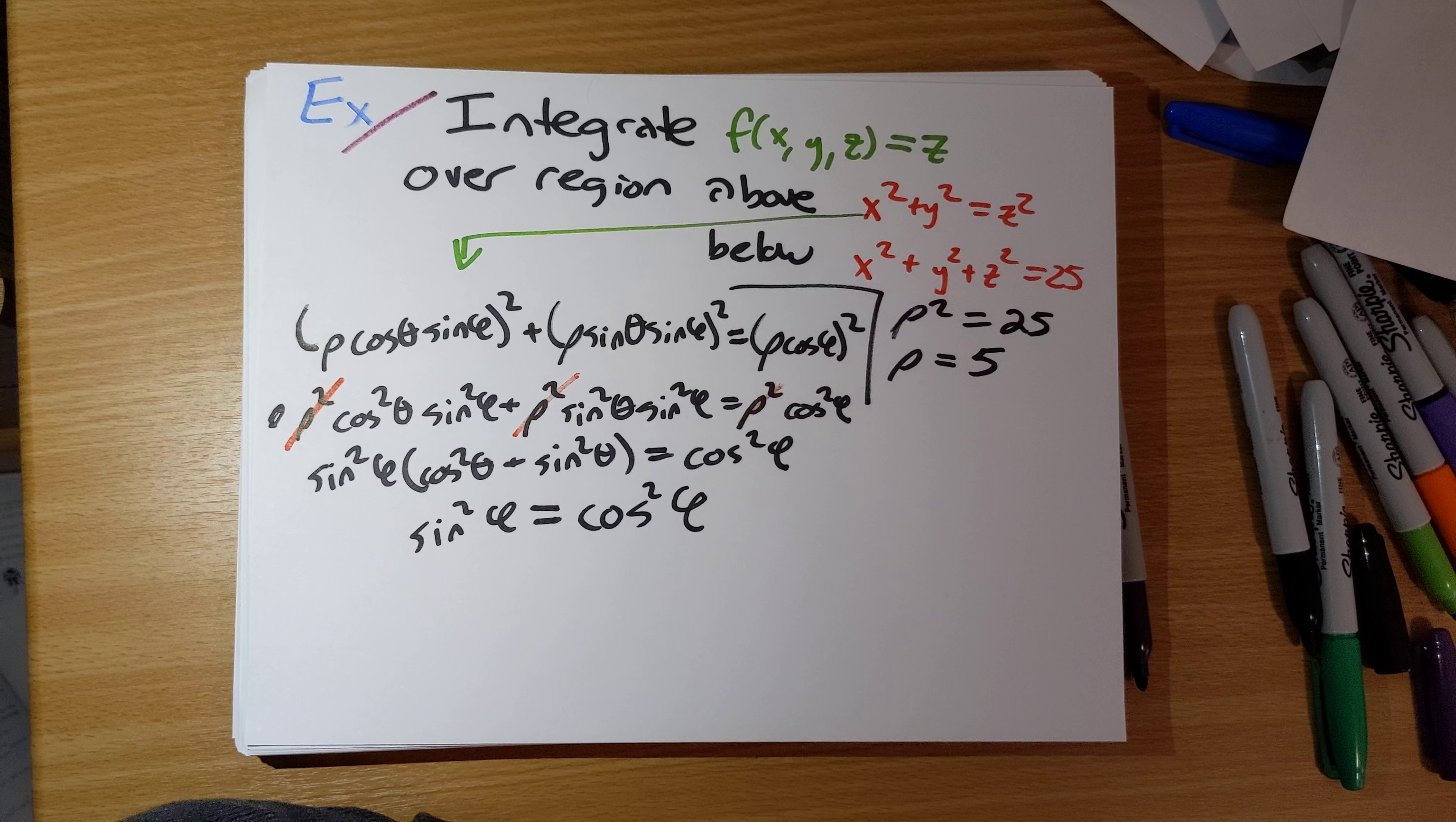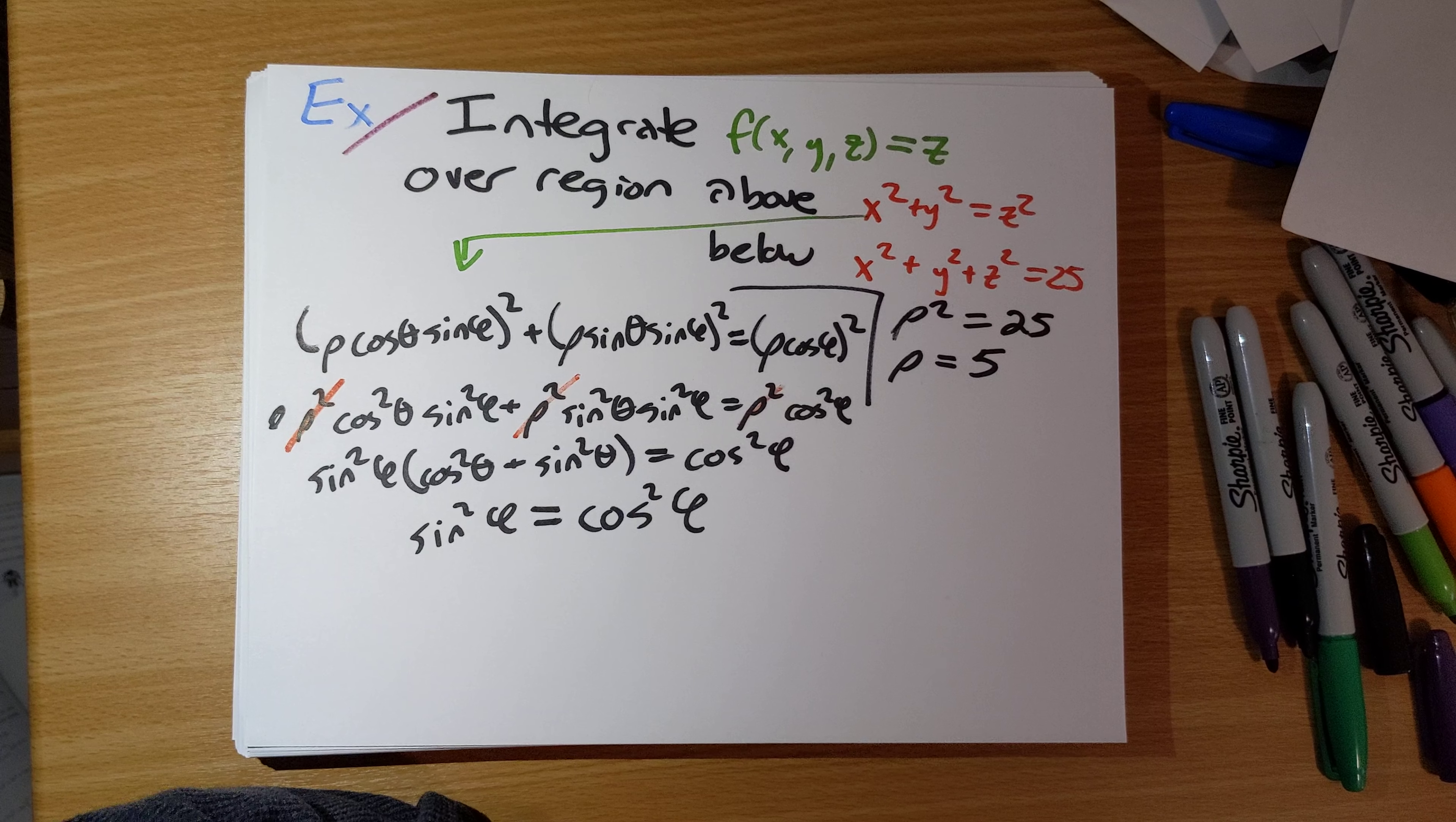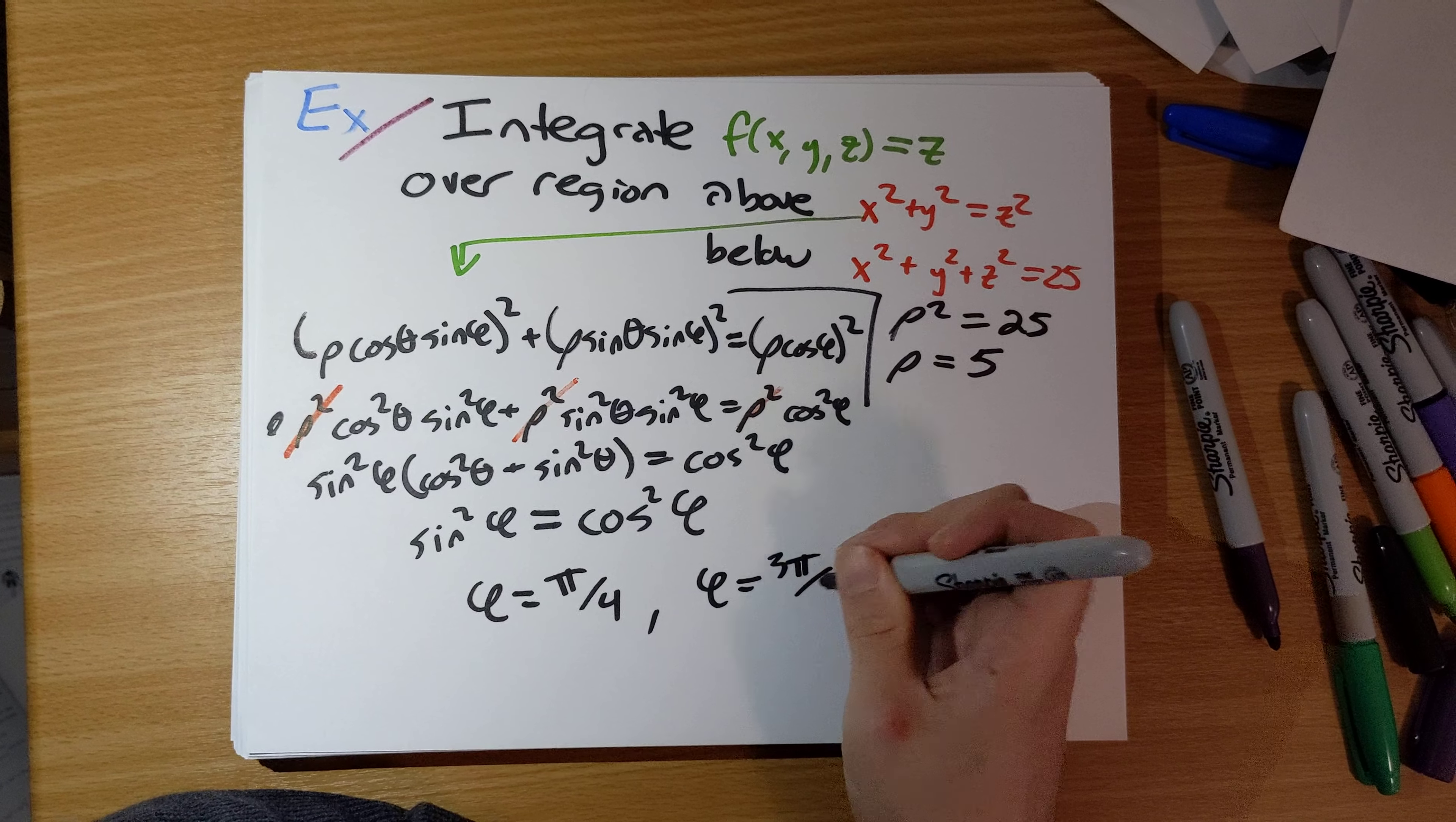Okay, what are the values of phi for which sine squared phi equals cosine squared phi? This is equivalent to sine of phi equals plus or minus cosine phi. This will have two solutions: phi equals pi over 4, and phi equals 3 pi over 4.